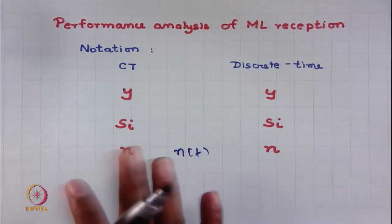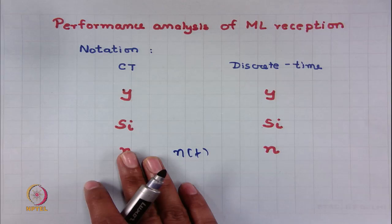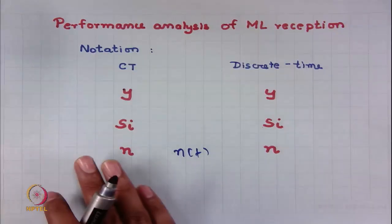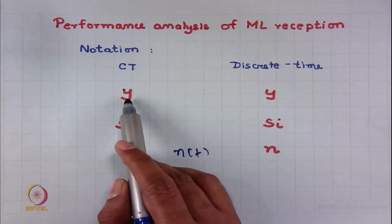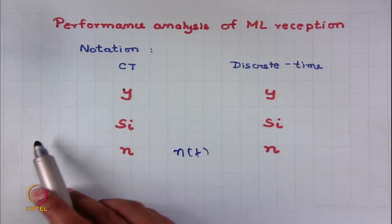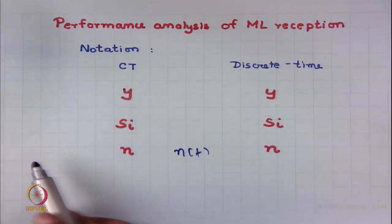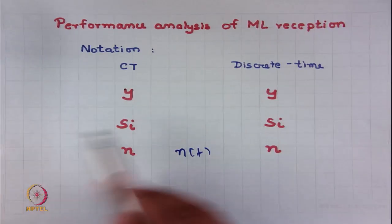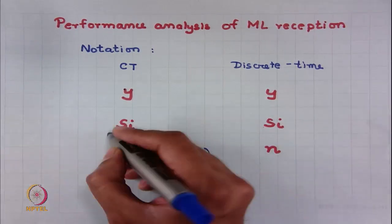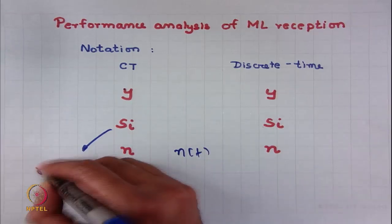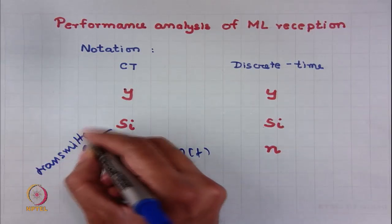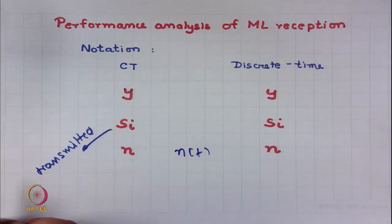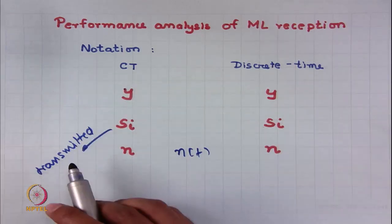Our notations are a bit sloppy here, but this is because there is complete equivalence between the two worlds. We use the notation y to denote the received signal — it denotes both a continuous time signal and a discrete time signal. Sᵢ we use for denoting the transmitted signal, and it can also mean either a continuous or discrete time signal.